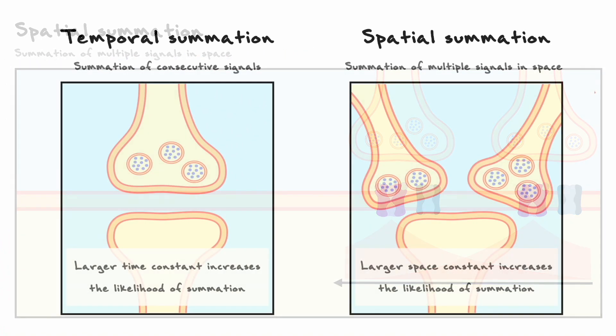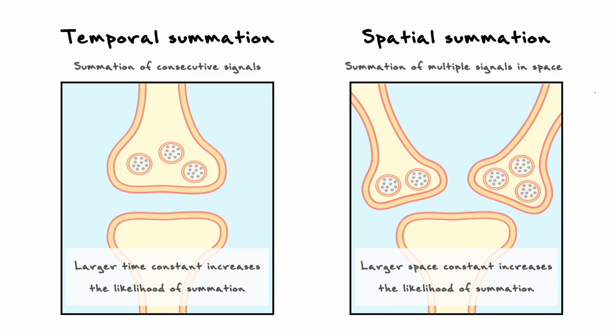In summary, there are two main types of summation that we can consider: temporal and spatial. The main elements that can give us the most insight as to the signal summation are the time and space constants. In general, the bigger they are, the less the signals decay and the more probable it is they will summate.